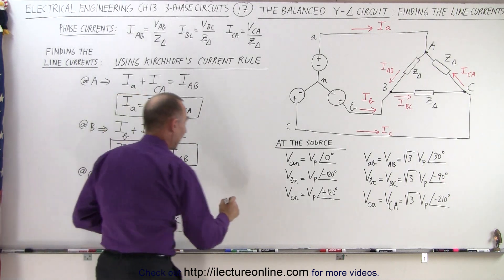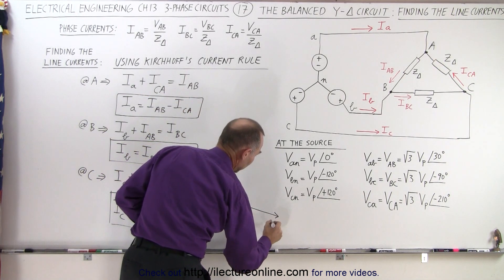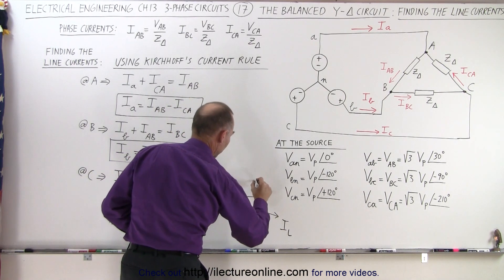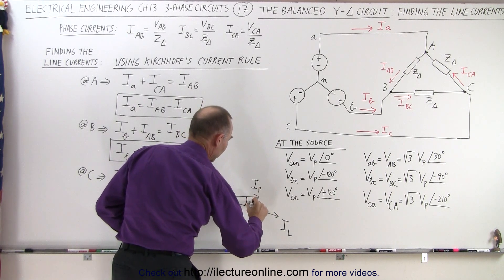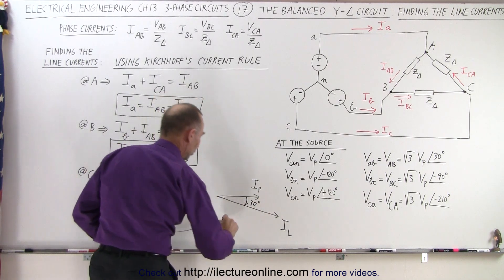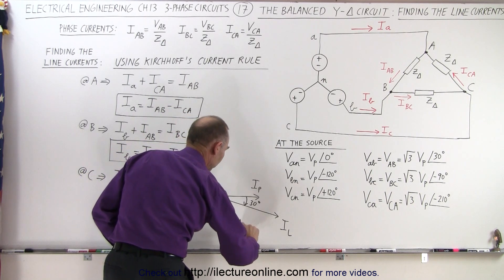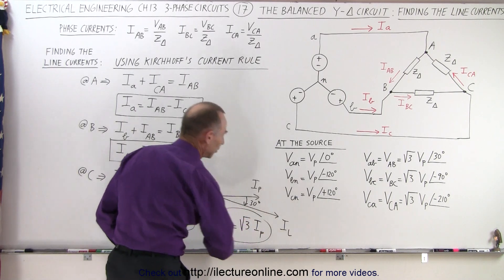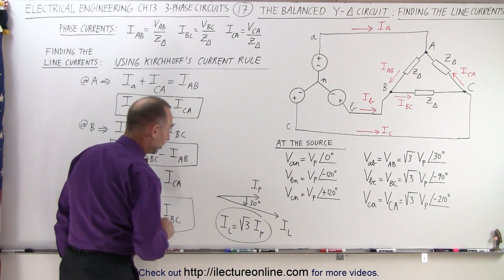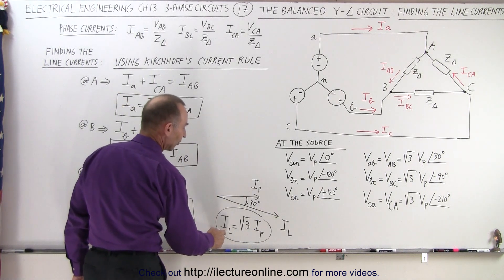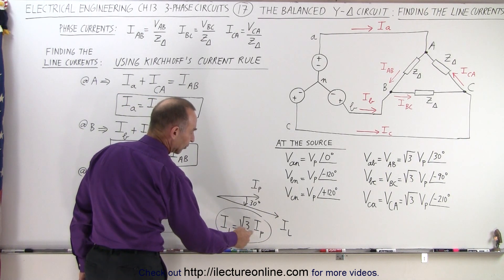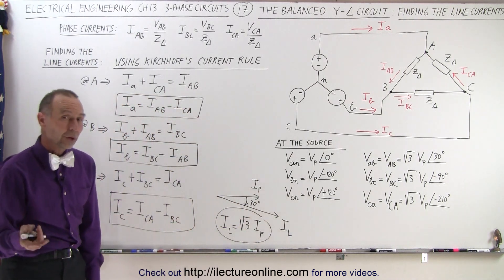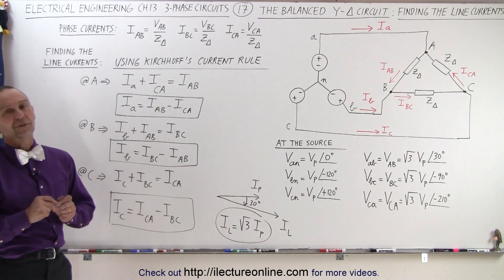It is also good to know that the line current lags the phase current by 30 degrees. And the magnitude of the line current IA is equal to the square root of 3 times the phase current magnitude. So we have the magnitude relationship and the phase relationship. If we can find either the line currents or the phase currents, we know the relationship between the two, including the phase angle difference, so we can find one from the other.